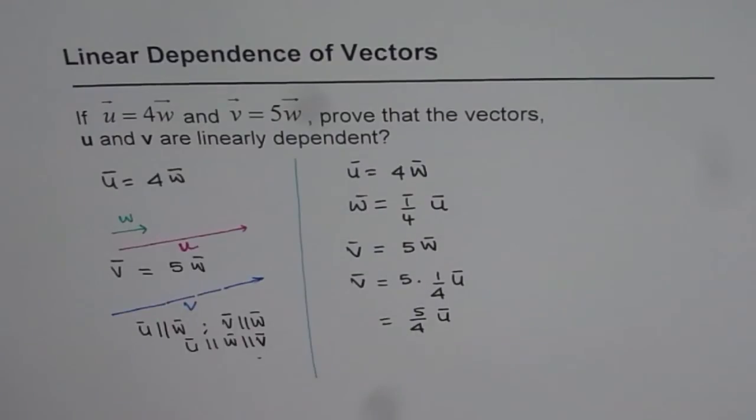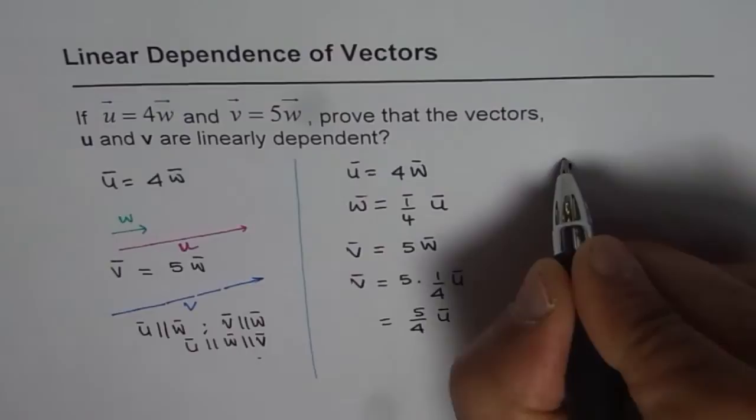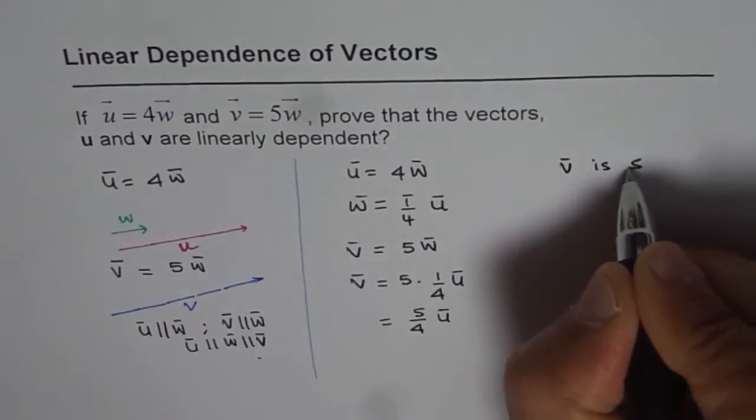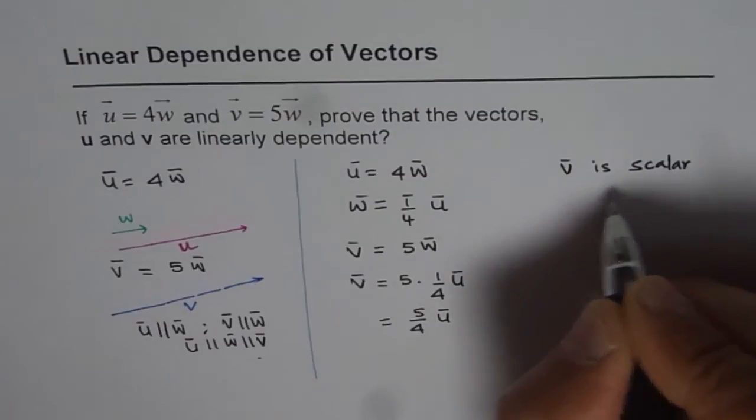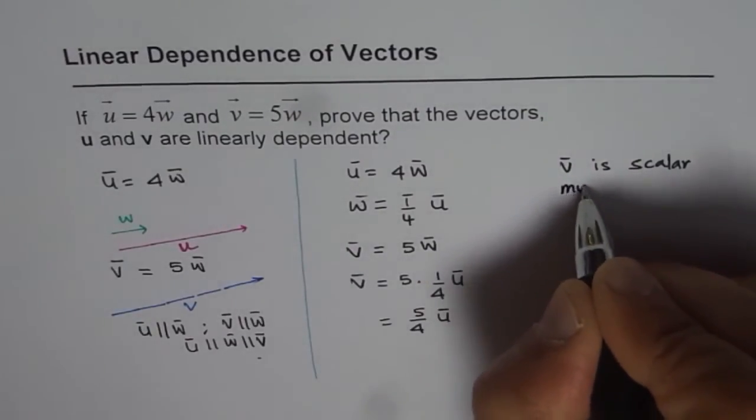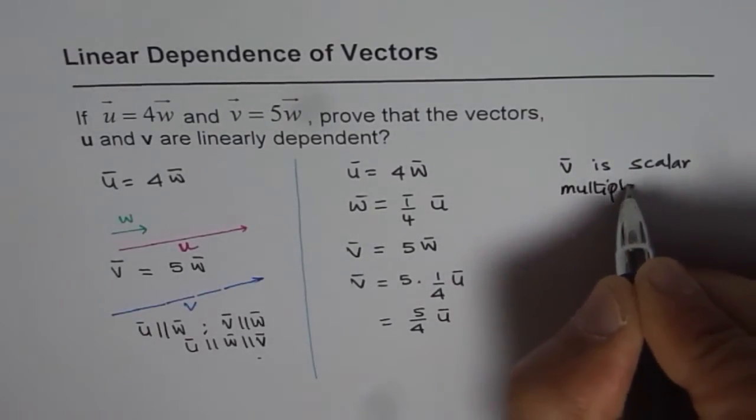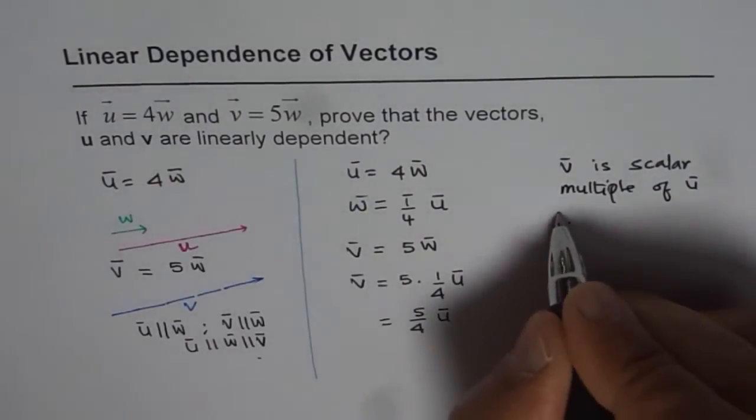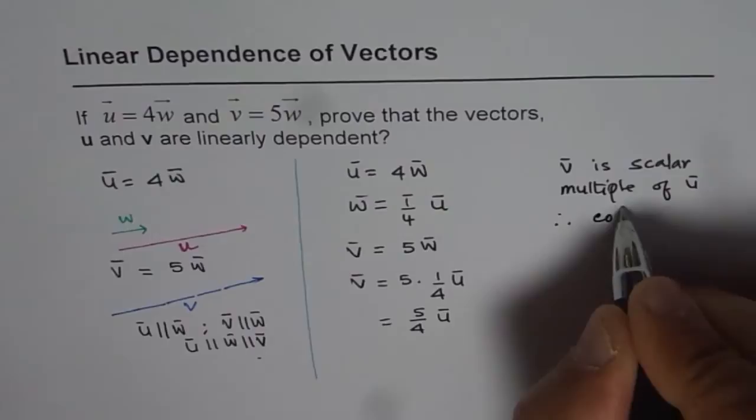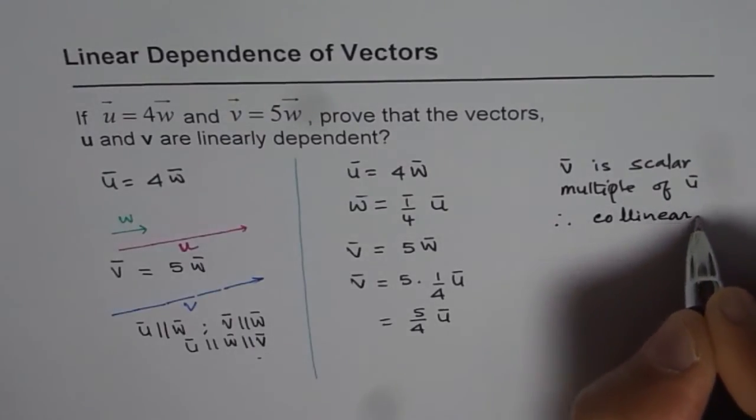Here, what are we saying? We are saying that vector v is a scalar multiple of vector u. Therefore, they are collinear.